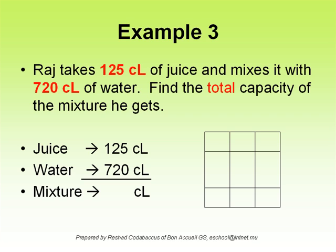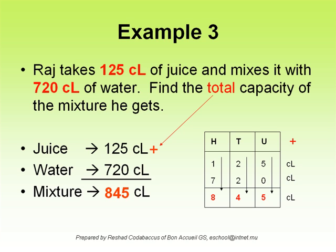Juice: 125 centiliters. Water: 720 centiliters. To know the total capacity of the mixture, place the numbers in the columns. Now add the units first, then the tens, and finally the hundreds. The answer is 845 centiliters.